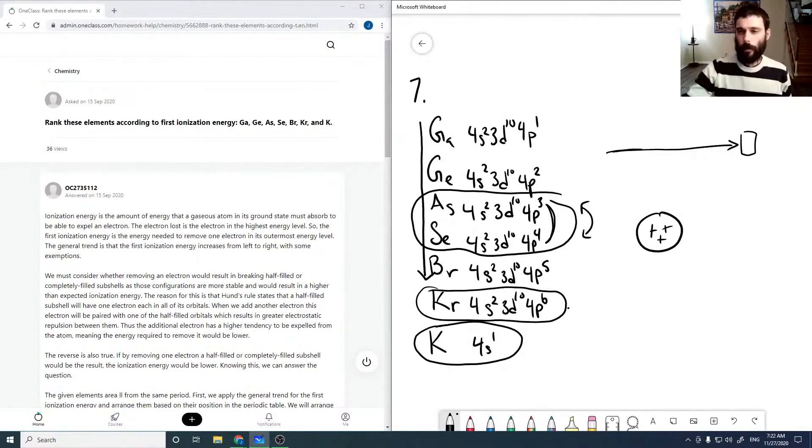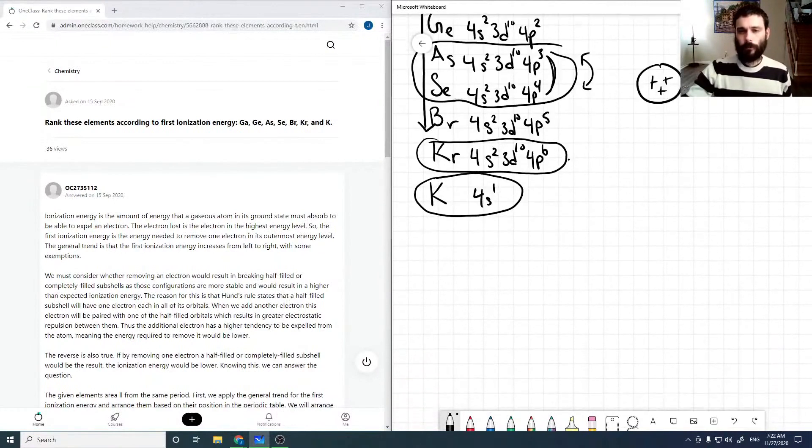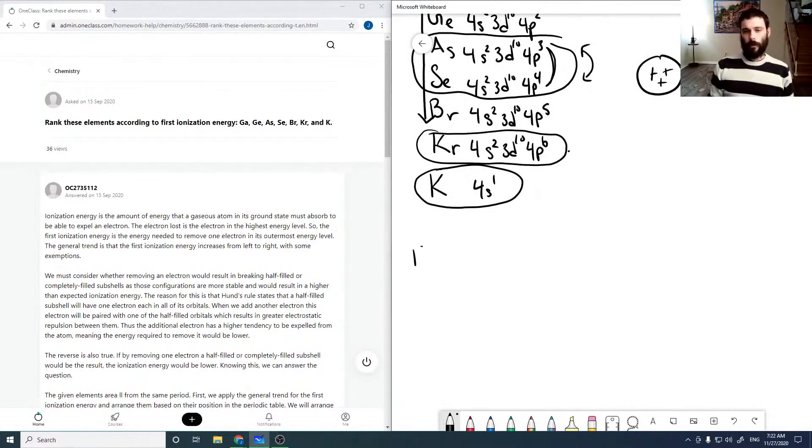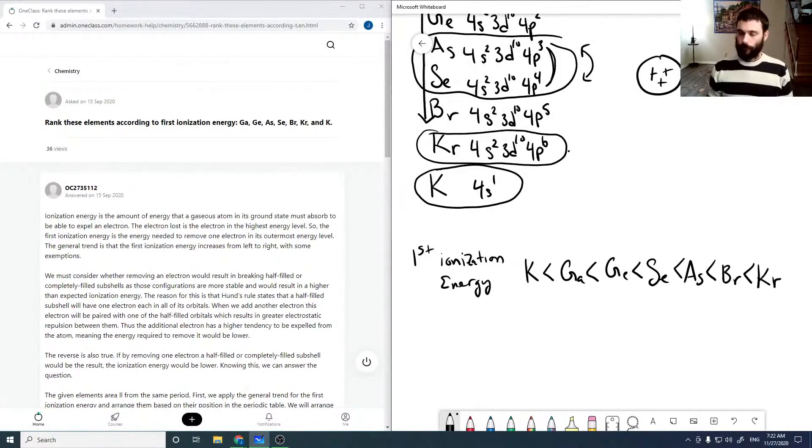So to answer the question here, then for our first ionization energy, it should be potassium's smallest, which is less than gallium, which is less than germanium, and now arsenic and selenium are going to swap. So less than selenium, which is less than arsenic, which is less than bromine, which is less than krypton. So basically it goes right across the periodic table from left to right, except selenium and arsenic are swapped.